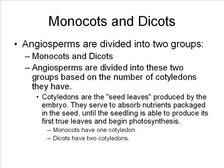Angiosperms are divided into two groups: the monocots and the dicots. This is based on the number of cotyledons they have.